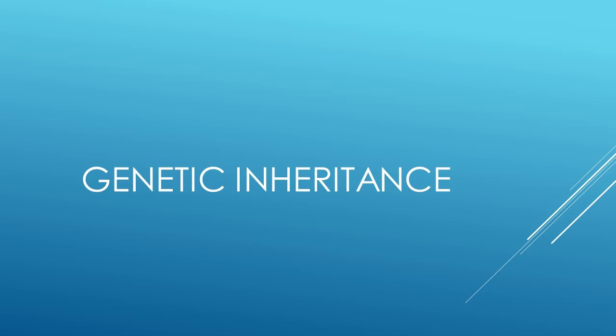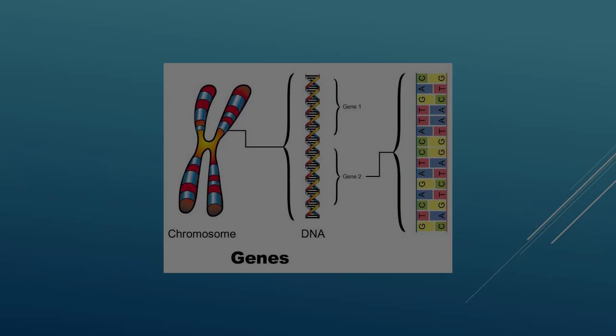If you took high school biology, you may remember learning about something called genetic inheritance. DNA, or deoxyribonucleic acid, is the blueprint for how living organisms are built. DNA is made out of two long strands that contain genetic information, or genes.